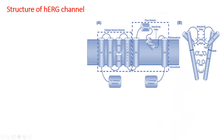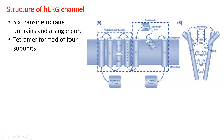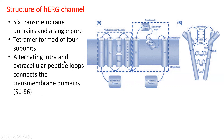Now let's see the structure of the HERG channel. This HERG channel contains six transmembrane domains and a single pore domain. Four subunits form a tetramer, and alternating intracellular and extracellular peptide loops connect the transmembrane domains. As you can observe, the extracellular and intracellular peptide loops are connected to the transmembrane domain.